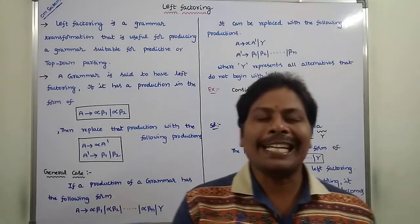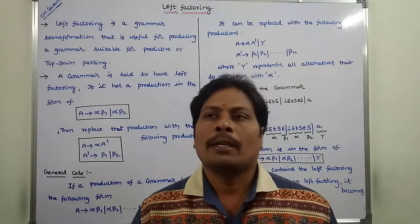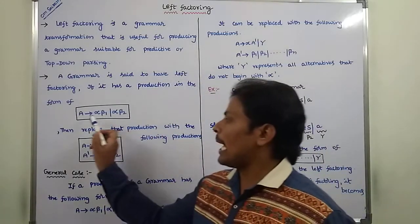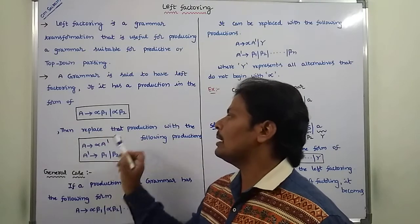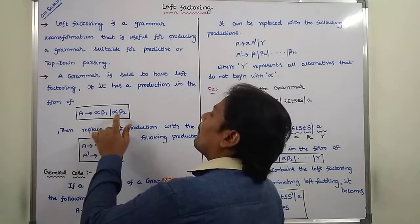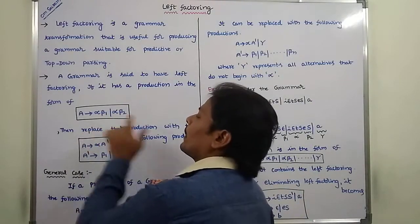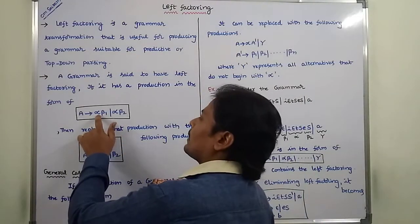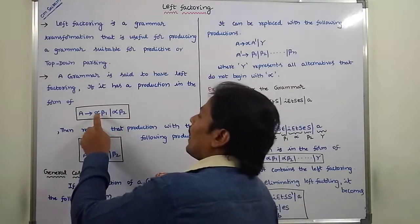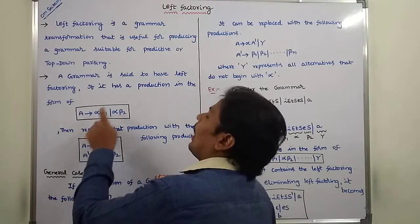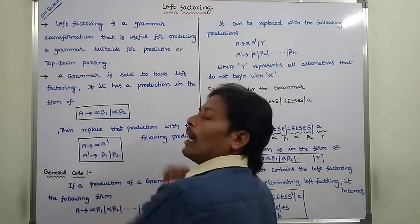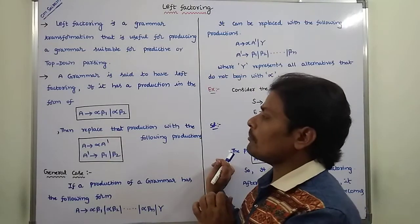First of all, what is left factoring? Suppose a grammar has a production of the form A tends to alpha beta 1 or alpha beta 2. Here, alpha is common in the right-hand side of the production. The first part is alpha beta 1 and the second part is alpha beta 2, where alpha is the same in both parts.